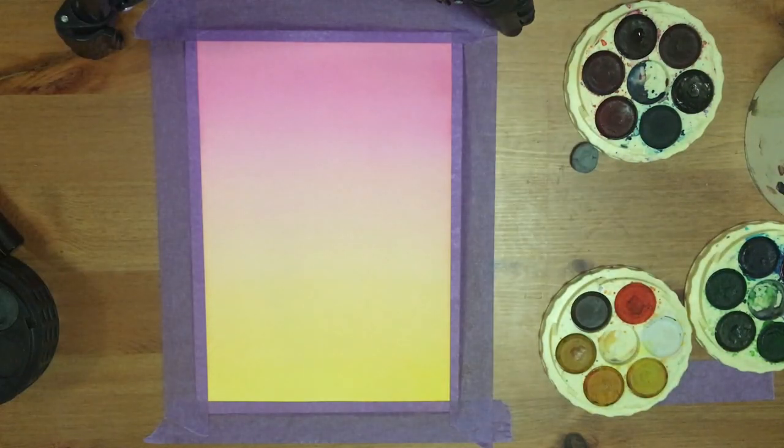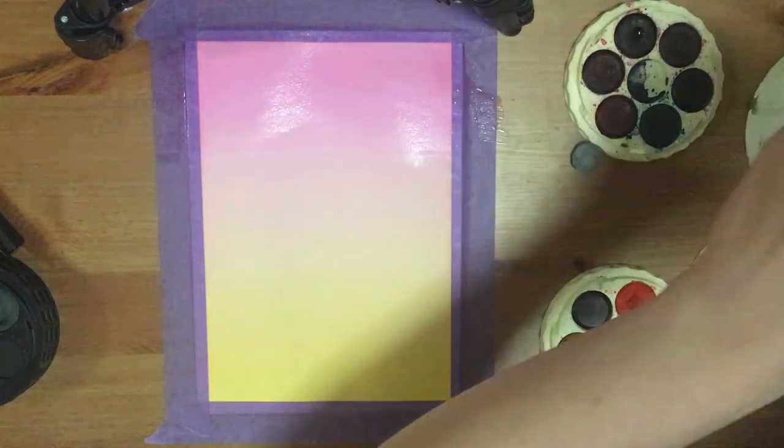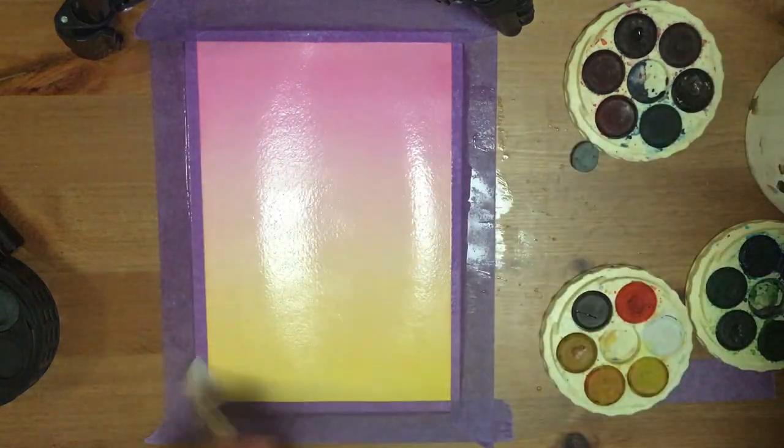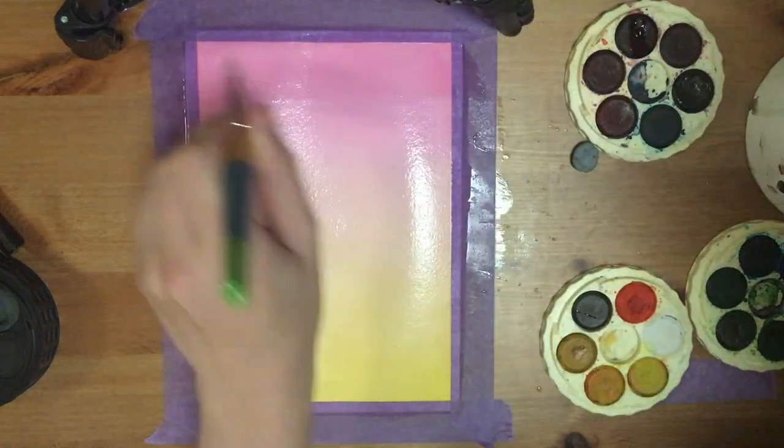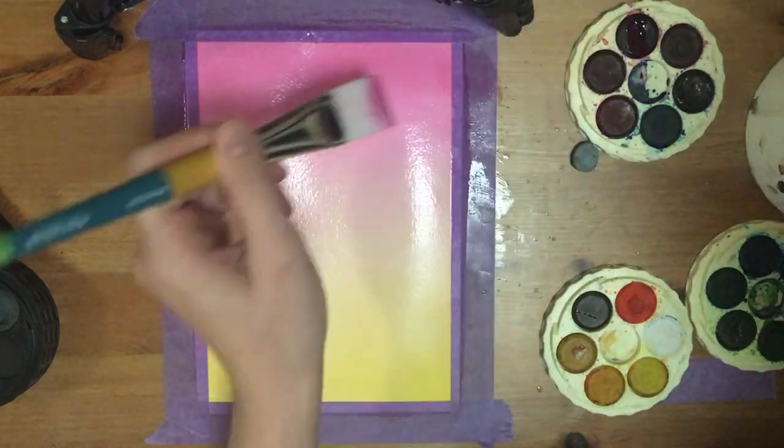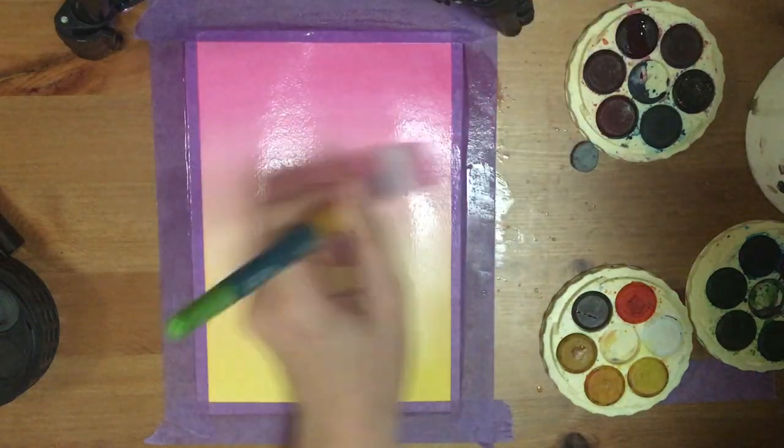Now I've waited for that layer to completely dry before I go in with the second layer and it's the exact same process. I am just wetting the entirety of the page and then I'll start again with the pink. And then once I'm happy with how much I've built up the pink and the vibrancy, I will move on and do the exact same with the yellow.